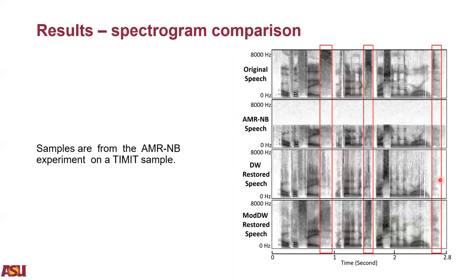This figure shows the spectrum results. The first is the original speech, the second is the AMRNB compressed speech — due to the low-pass filter, the high-frequency information is lost after compression. The third is the baseline model restored speech, and the fourth is our modified DiffWave restored speech. It is obvious that our modified DiffWave model can recover more information in high-frequency bands.